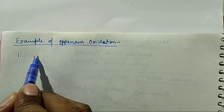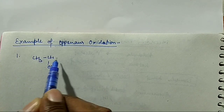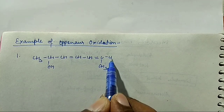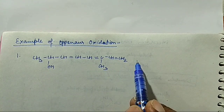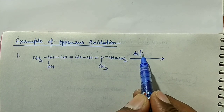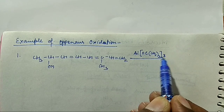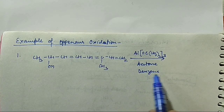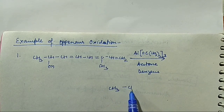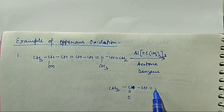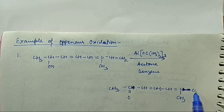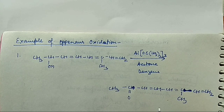Now let us consider examples of Oppenauer Oxidation. Example 1: A compound CH₃–CH(OH)–CH=CH–CH=CH–CH=CH–CH=CH–CH=CH₂ is treated with Aluminium Tertiary Butoxide Al(OC(CH₃)₃)₃, acetone as hydrogen acceptor, and benzene as solvent. The product is CH₃–C(=O)–CH=CH–... — the alcohol is converted into ketone, and the double bonds are not affected at all.